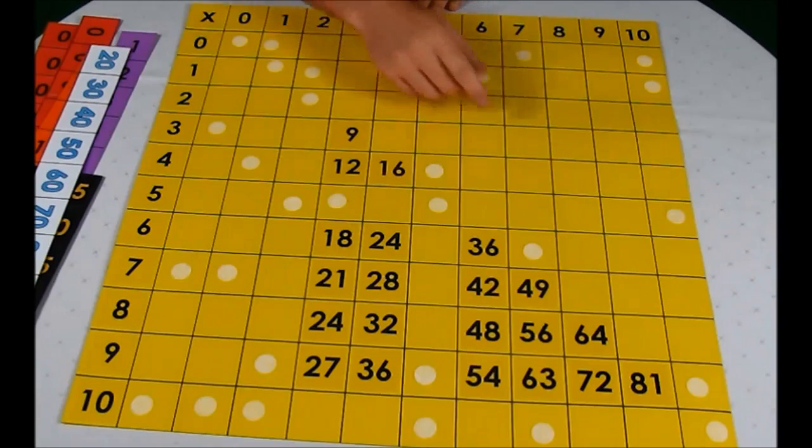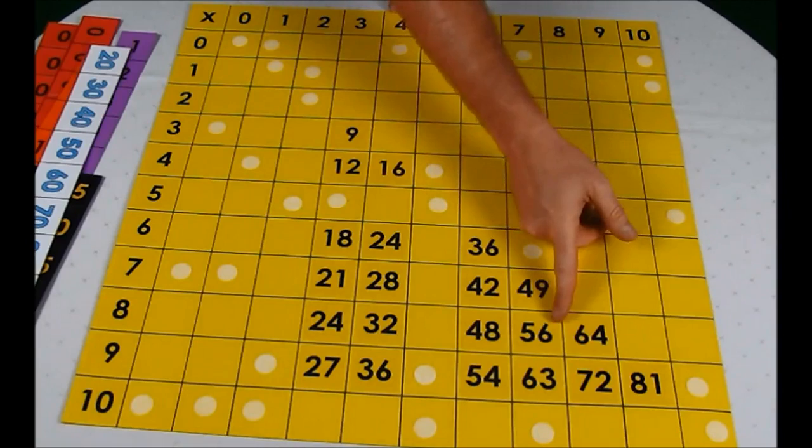Now, it does show you that one of the hardest tables to learn is seven times eight is fifty-six, and we'll talk about that one a little bit later.